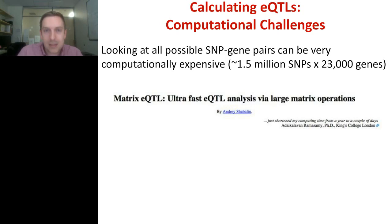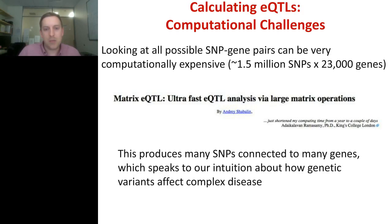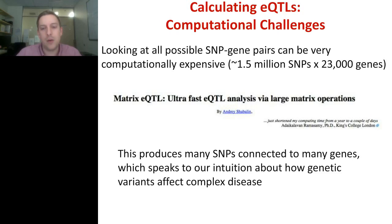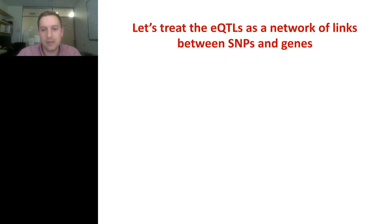This approach of computing many eQTLs is reasonable because what it's going to produce is many SNPs connected to many genes. This speaks to our intuition about how genetic variants affect complex disease: with the exception of highly penetrant Mendelian diseases, when we're thinking about complex disease — especially ones that are age-related or late onset — these things are being influenced by many SNPs that are potentially of weak effect, as in the GWAS associations. You have thousands of SNPs influencing genes, gene regulation, and cell function.